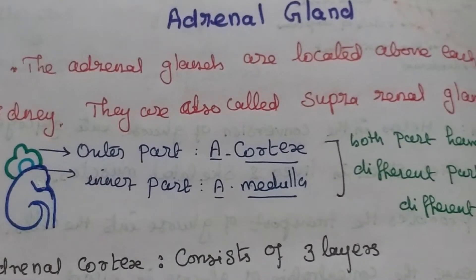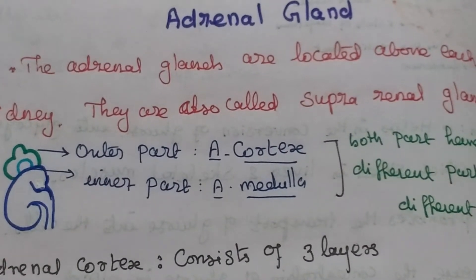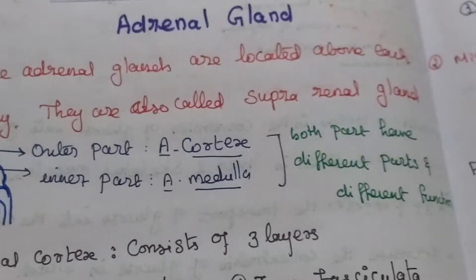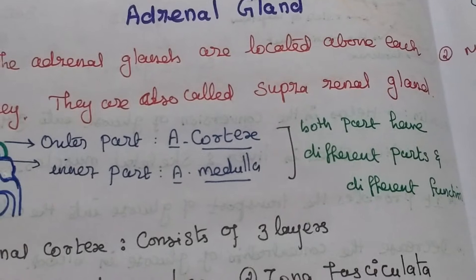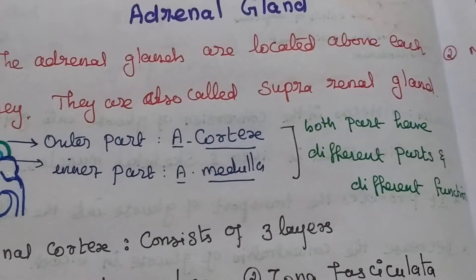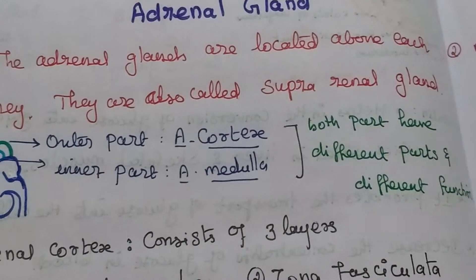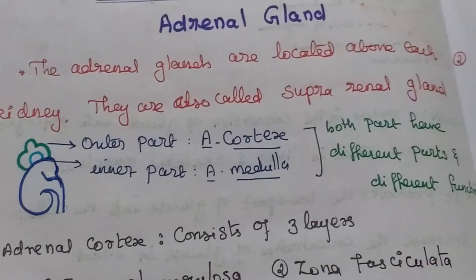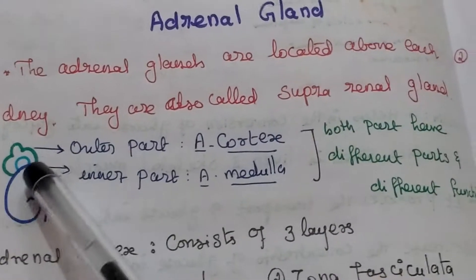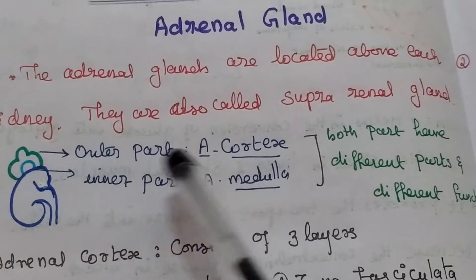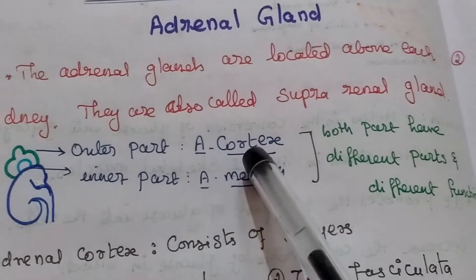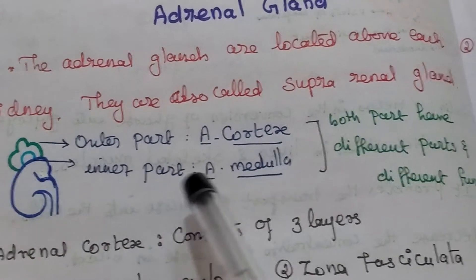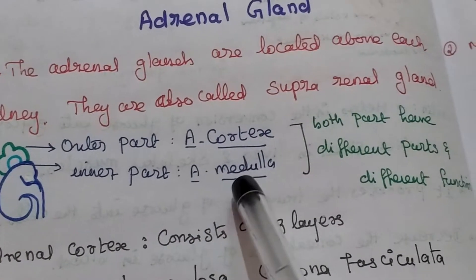The adrenal gland is located above the kidney. It is also called the suprarenal gland — 'renal' means kidney. It has two parts: the outer part is called the adrenal cortex, and the inner part is called the adrenal medulla.